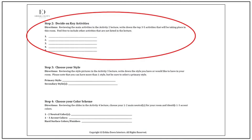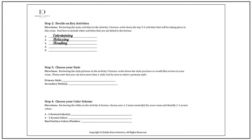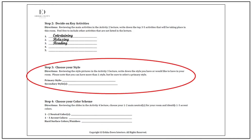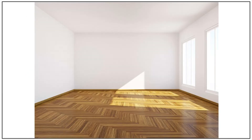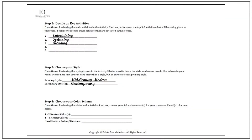Step two is decide on key activities. As this is a living room, this is going to be a place for entertaining and relaxing. I love to read, so I'll choose that activity specifically. Step three is choose your style. With this beautiful wood flooring as inspiration, I've decided to go with mid-century modern as my primary style, and contemporary as my secondary style.